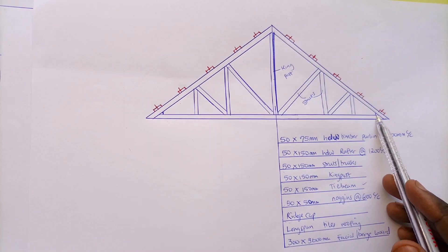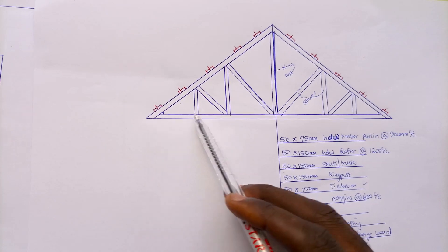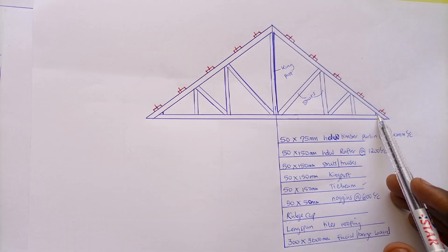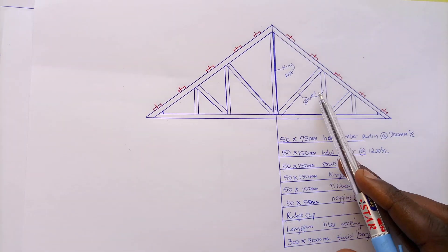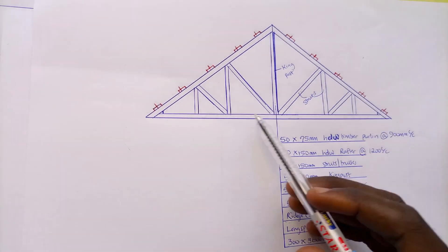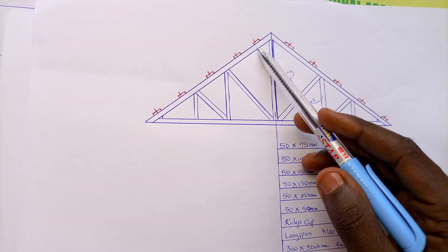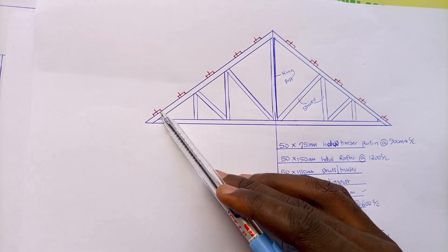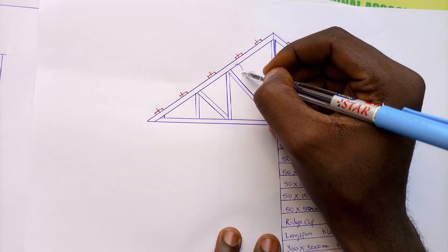We have the king post, the struts, the tie beam, and the wall plate — which I'll show you right away. The wall plate spans across the length of the building, and it is on the wall plate that your tie beam is nailed. Then this slanting span that projects outward is what I refer to as the rafter.